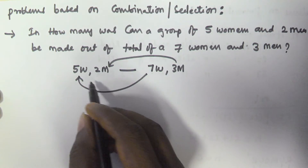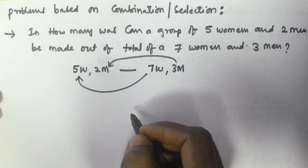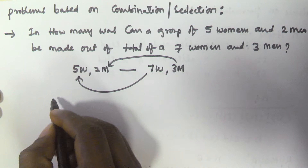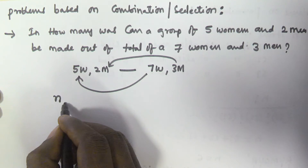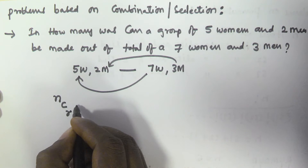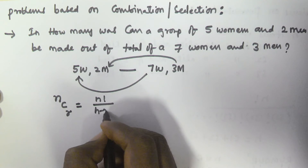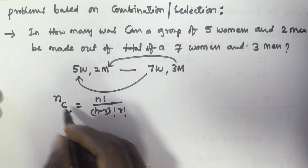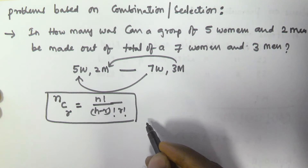So how can we select 5 women out of 7? The selection formula is: if there are n items out of which we are selecting r items, that is nCr, which is equal to n factorial divided by (n minus r) factorial into r factorial. This is the selection formula for selecting r values out of n values.